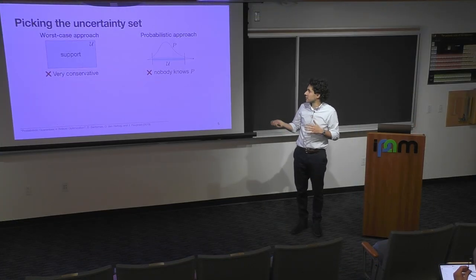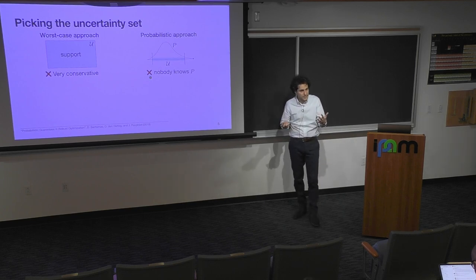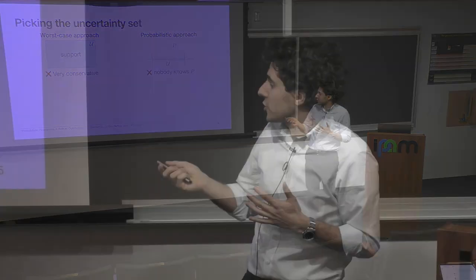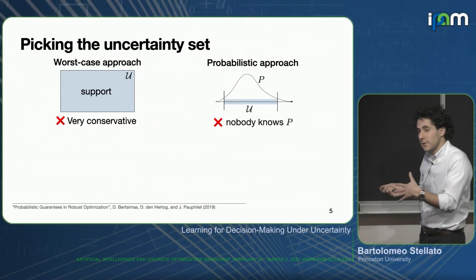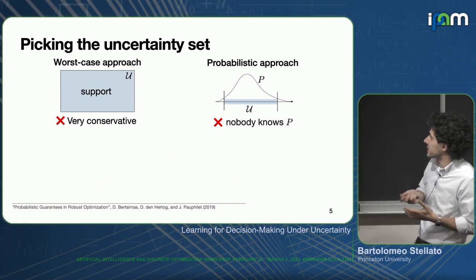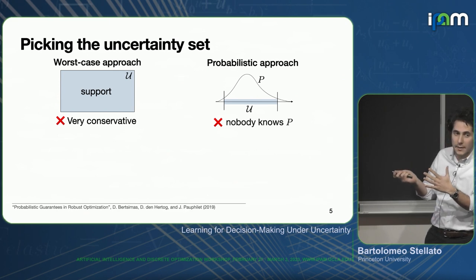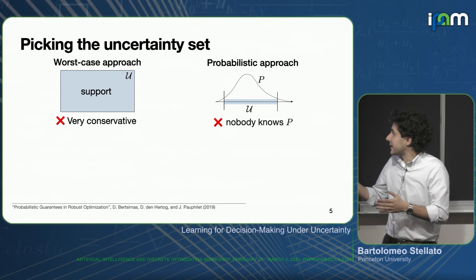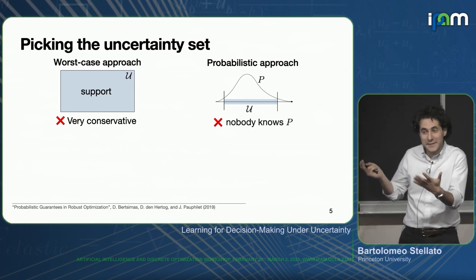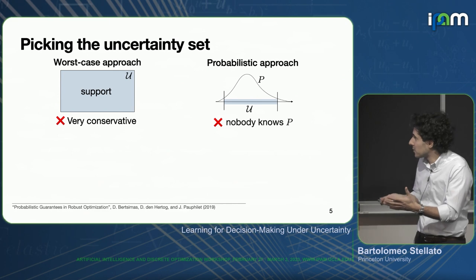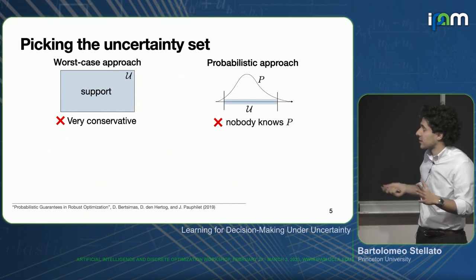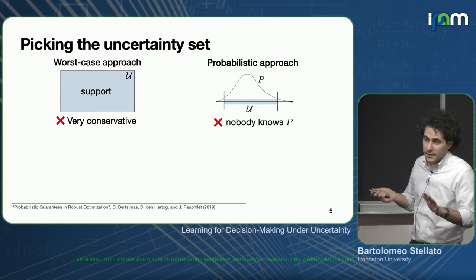More common approaches in robust optimization start by looking at the probability distribution describing the uncertainty. Instead of taking a worst-case approach, you build a set that tries to capture a big part of the probability mass, and you immunize against all realizations in this set, hoping that in practice this translates into a high probability of constraint satisfaction. The downside is that nobody knows the true probability distribution if there even is one, and even if you know it, these problems are still very hard and intractable because you need to integrate probability densities in multi-dimensional spaces.